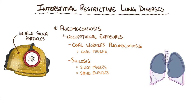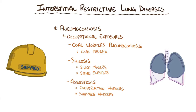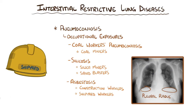The last type is asbestosis, which is seen in construction and shipyard workers because asbestos has been used in building materials for a long time. Often asbestos fibers settle in the lower lobes and on the inner pleural membrane which surrounds the lung. White thick patches along the pleural membrane called pleural plaques can commonly be seen on chest x-ray along the lower portions of the chest, but how they're formed is still unclear.